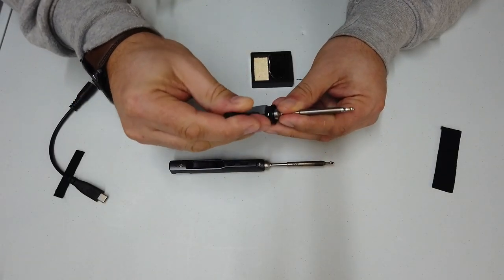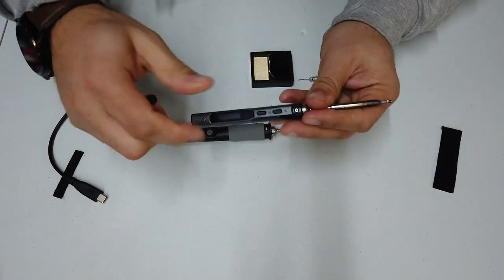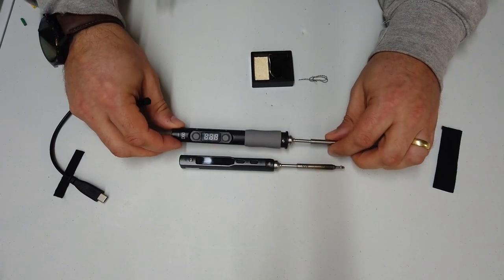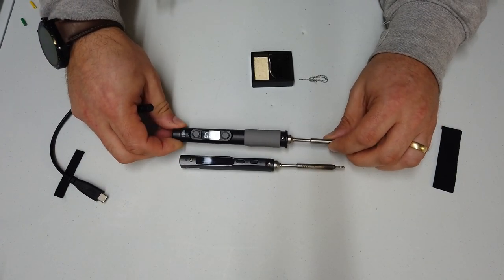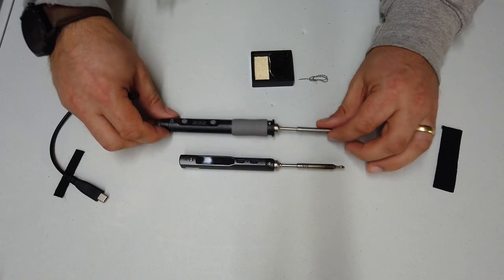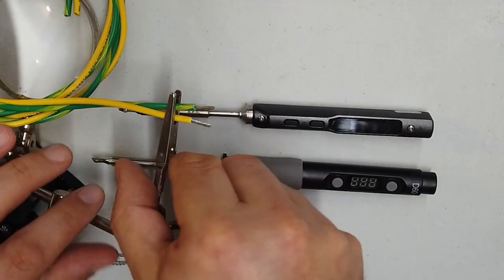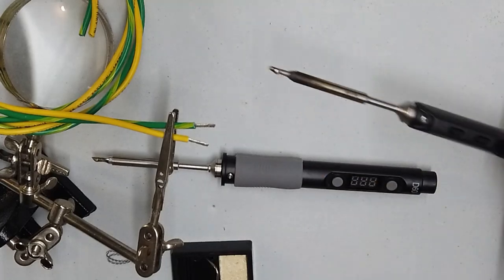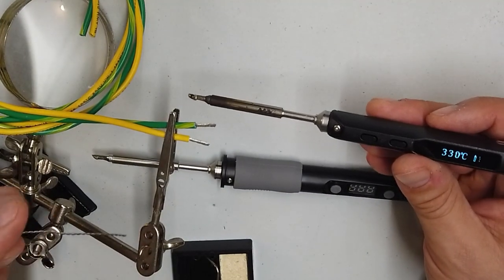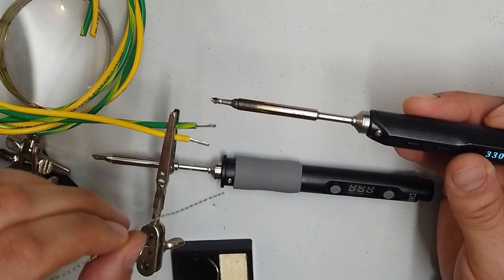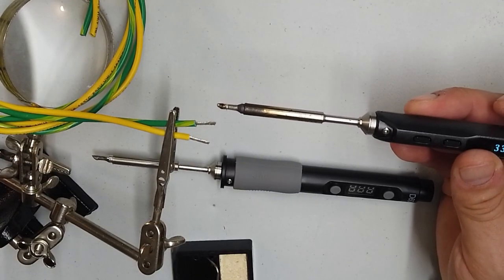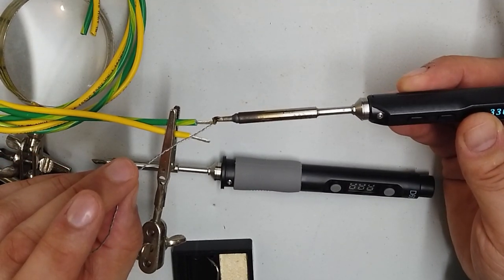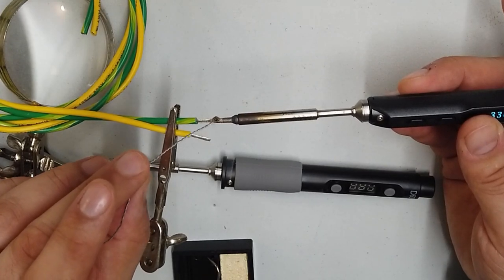We have interchangeable tips. Ultimately, what you're paying for is a slightly more refined control handle. But if I'm completely honest with you, the functionality of these appears exactly the same. Let's put these to the test. Normally, you would use these irons for light duty soldering. Let's test out the capability by tinning some of this rather fat 16 AWG wire.